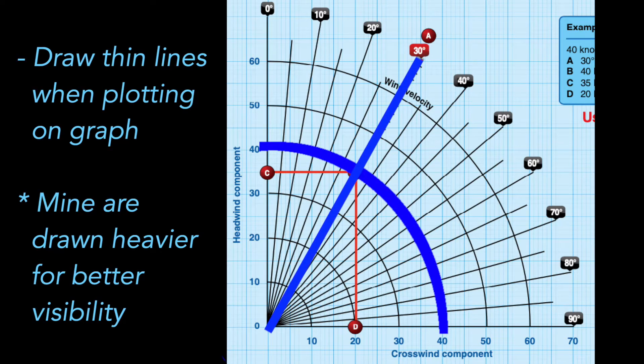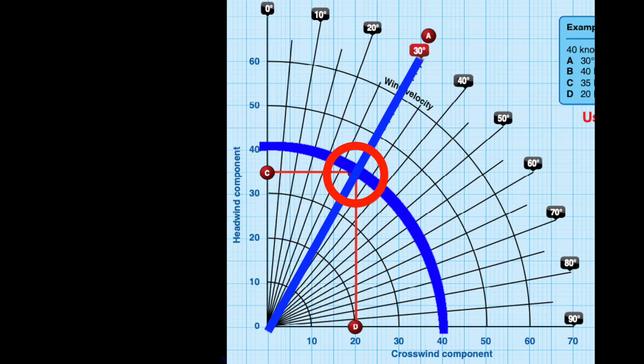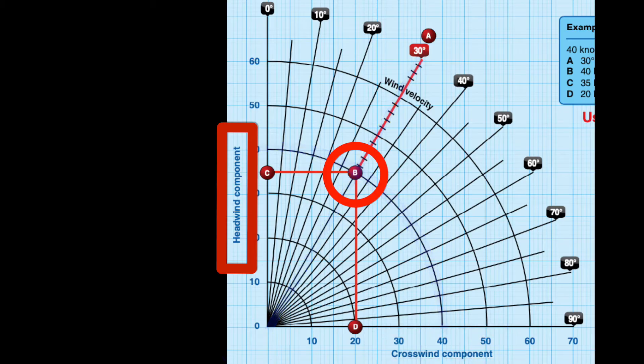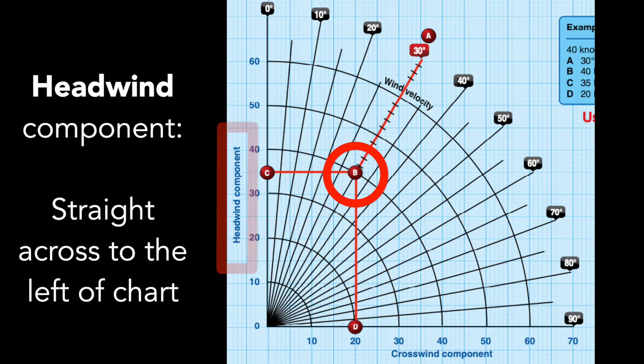We can see this particular curved line crosses at a point with our previously selected 30 degree line. From this point we can read our results for both the headwind and crosswind component. To get the headwind component reading, draw a straight line horizontally across to the left.